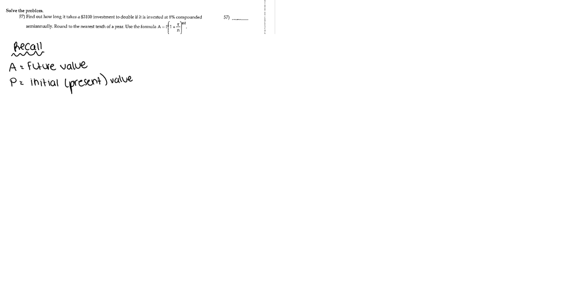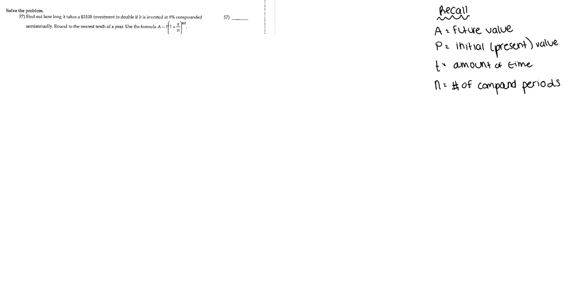Let's go ahead and define the terms of our given formula so we know what to plug in where. A is equal to our future value, P is equal to our initial or present value, T is our amount of time, N is equal to our number of compound periods, and R is our rate.